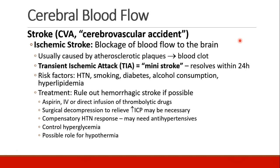Now we'll talk about some cerebral vascular disease. The first is a stroke, also called a CVA — cerebral vascular accident. There are two kinds of stroke. Ischemic strokes block blood flow to the brain, usually due to an atherosclerotic plaque that ruptures and becomes a blood clot. Patients can have TIAs — transient ischemic attacks — which are like mini strokes that resolve within 24 hours. Risk factors include hypertension, smoking, diabetes, alcohol consumption, and hyperlipidemia.